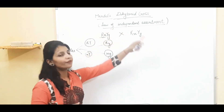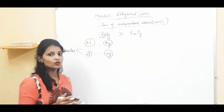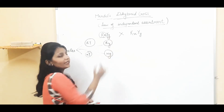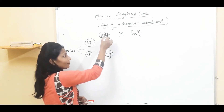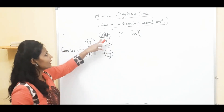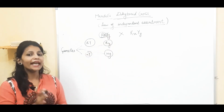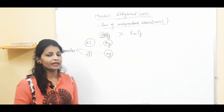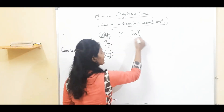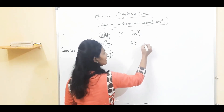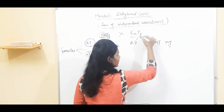Here we apply the law of independent assortment. The inheritance of the round character will not affect the inheritance of the yellow character in any way. This means capital R, independent of small r, can combine with capital Y or small y. Similarly, small r can combine with any of the Y alleles. So the inheritance of one character will not affect the inheritance of the other — this is the law of independent assortment. Both plants in F1 have the same genotype RrYy, so the same four types of gametes are possible from each.